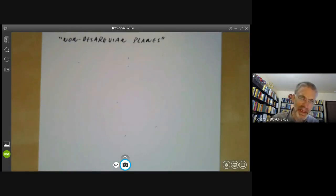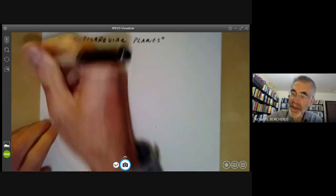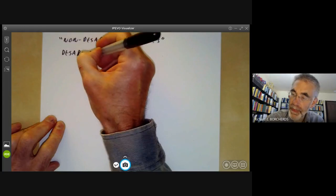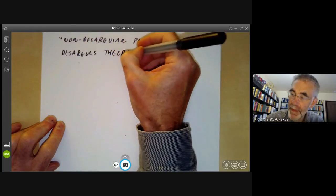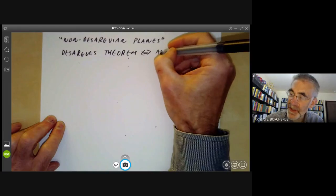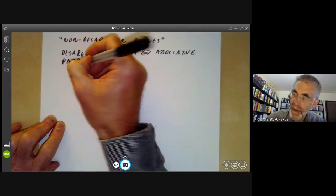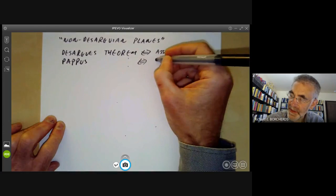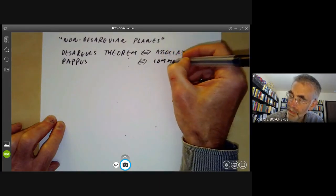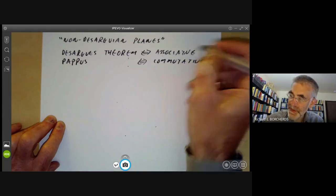Desargues' theorem turns out to be in some sense equivalent to the associativity law for multiplication. So what you can do if you've got a projective space then, and you consult an old book on projective geometry, they will show how you can introduce coordinates over some sort of ring for the space. And Desargues' theorem just says that this ring is associative. And just as Pappus' theorem says that the ring is commutative.